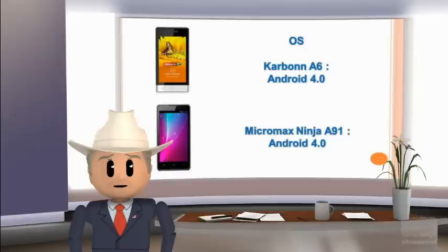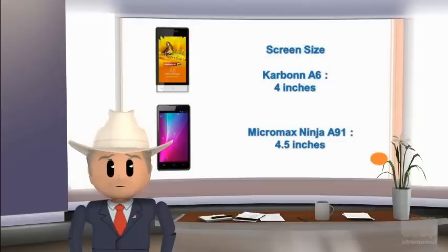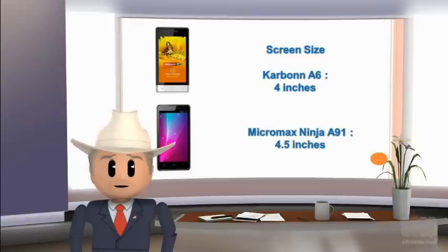OS of Karbonn A6 is Android 4.0, and OS of Micromax Ninja A91 is Android 4.0. Screen size of Karbonn A6 is 4 inches, and screen size of Micromax Ninja A91 is 4.5 inches.